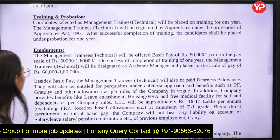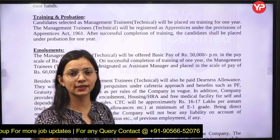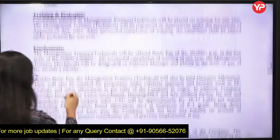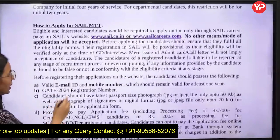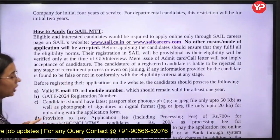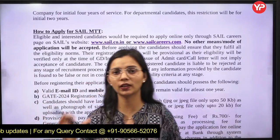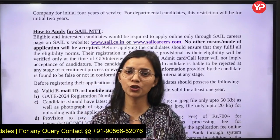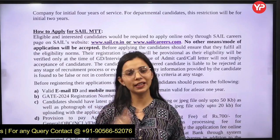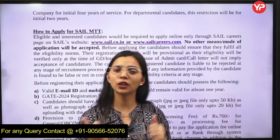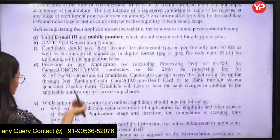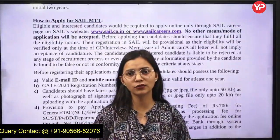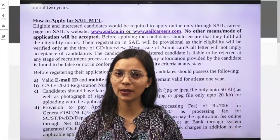The basic pay scale starts at 50,000 and can go up to 1,60,000. This is all about this particular video. To apply, go to the official website and apply online. The detailed notification will also be available on the Uopedia Job Updates and Preparation Telegram channel. Please focus on your group discussion and interview. All the very best.